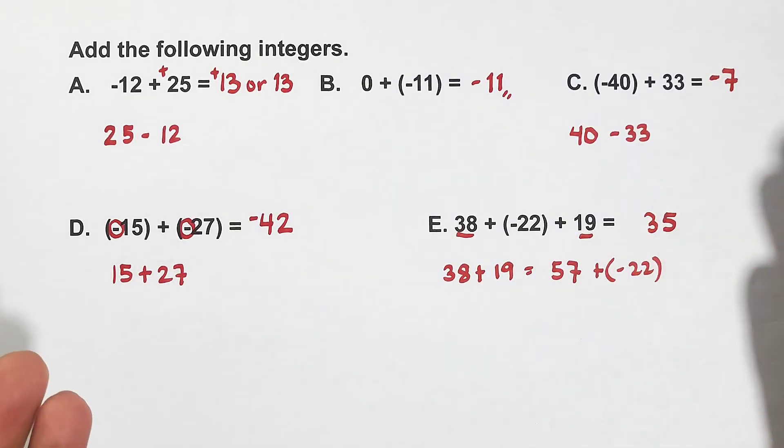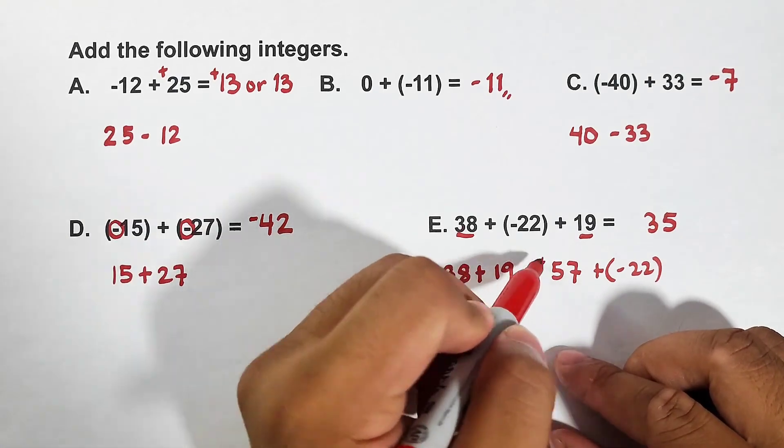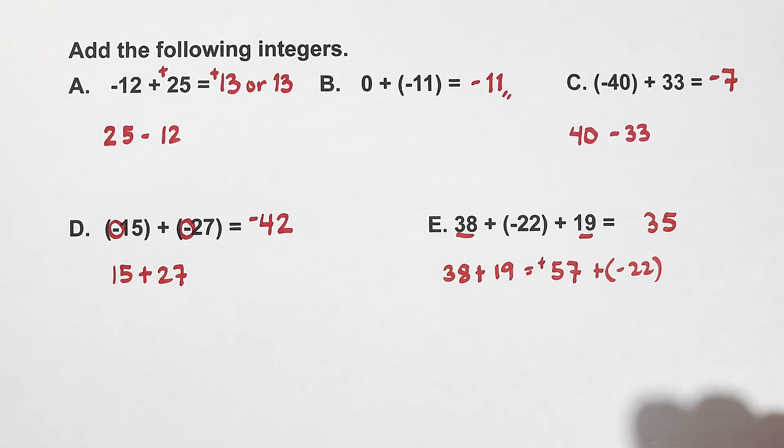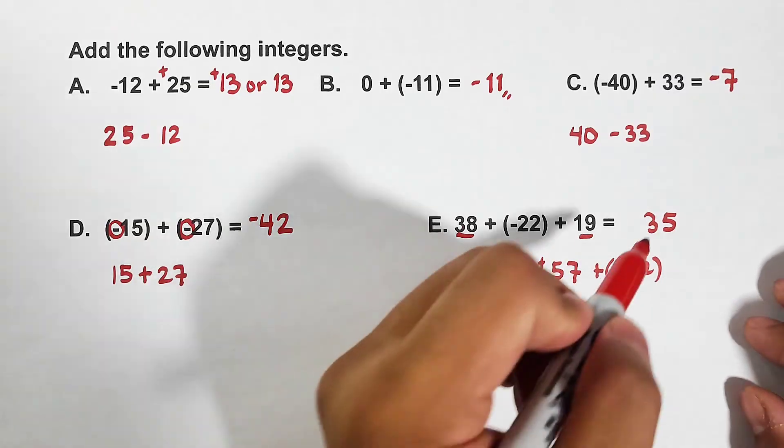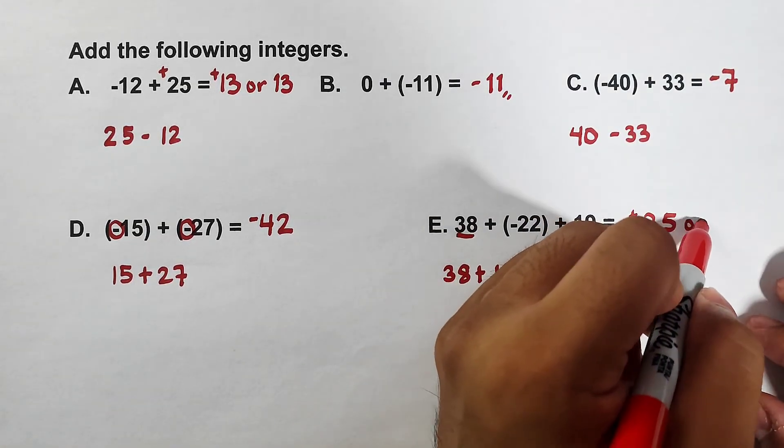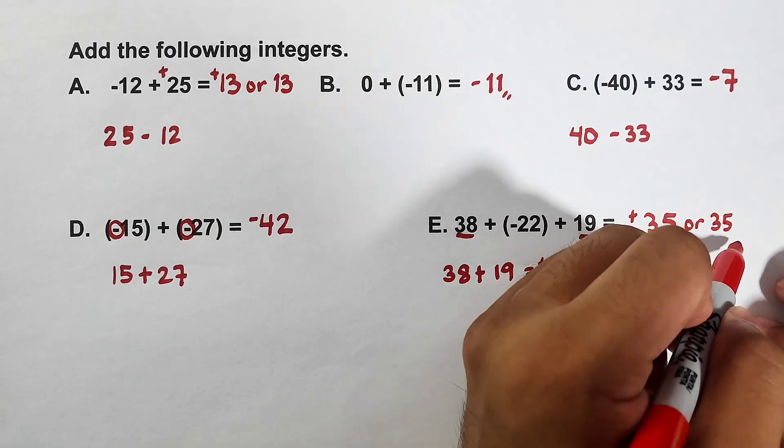Now let's decide which sign we will use. Is it the positive 57 or the negative 22? The absolute value of 57 is higher. That's why this is positive 35 or simply 35.